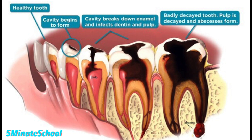Over time, patches of demineralization in the teeth start to get bigger. Small holes begin to develop because that area of the tooth gets weaker and is invaded by bacteria. This could be the stage where you start to get sensitivity in your teeth — for example, if you have something cold you could experience some pain, because bacteria is getting closer to the nerve.